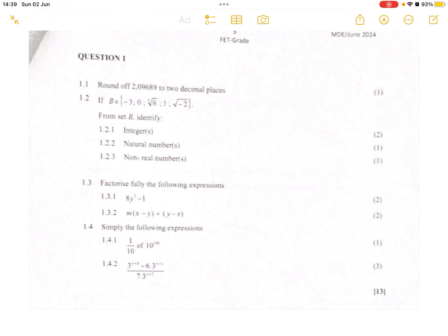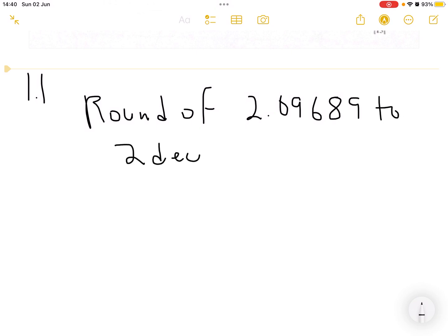In question 1.1, they want us to round off 2.09689 to 2 decimal places.